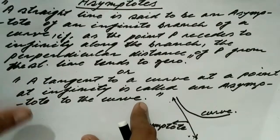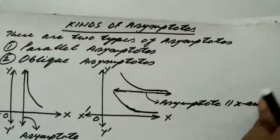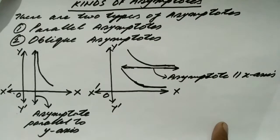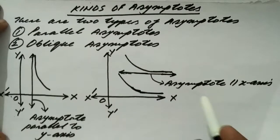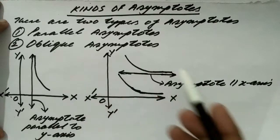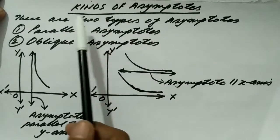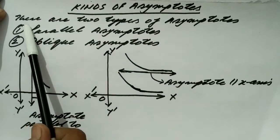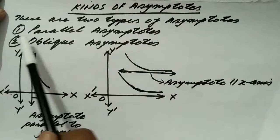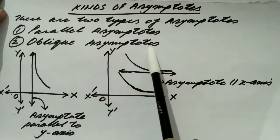Now we will discuss the types of asymptotes. There are two types of asymptotes: one is parallel asymptotes and the other is oblique asymptotes.